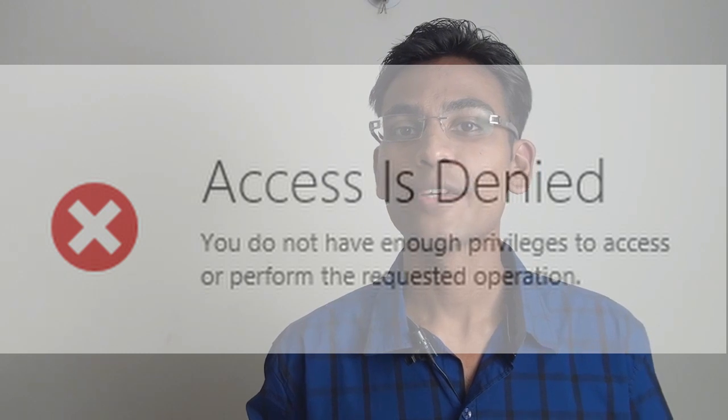The third permission is execute. For example, if you open an application and get a message like 'access denied,' that is when you don't have the privilege to execute that particular application. Programs and scripts need execute permission to actually make them runnable.